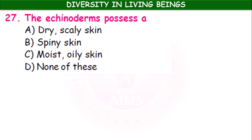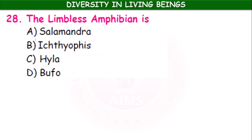Echinoderms possess a spiny skin. Among the following, which is the limbless amphibian — Salamandra, Ichthyophis, Hyla, or Bufo? The limbless amphibian is Ichthyophis.